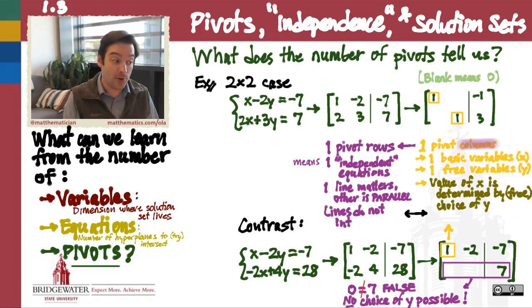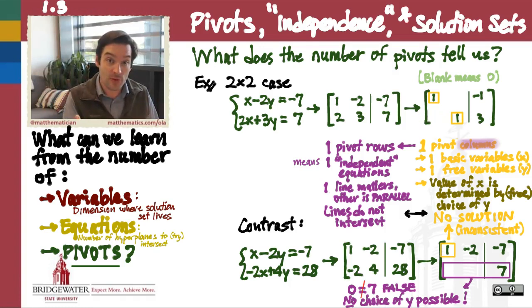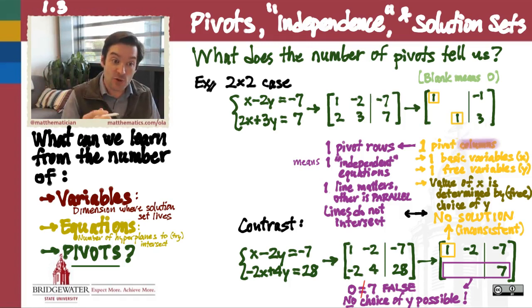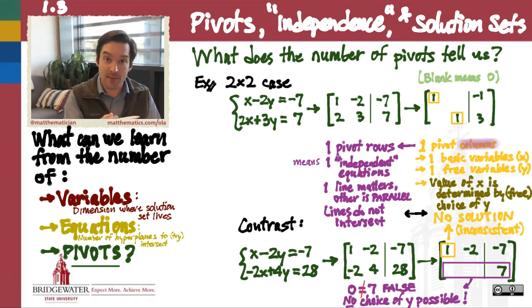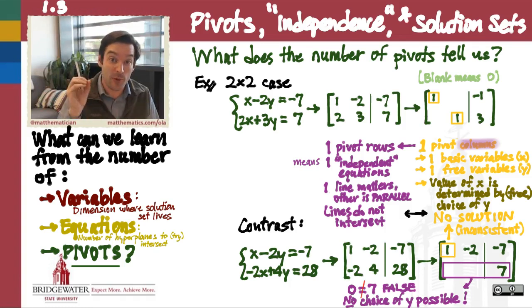Since those two are not equal to each other under any circumstance, there is no way to choose a value of y that's going to lead to a solution to this system. This system has no solution at all — graphically because the two lines determined by the rows do not intersect one another. Going from two pivots down to one, even in the simple 2x2 case, radically changed the nature of the solution set. When I had two pivots, I had two lines each telling its own unique story, and when we intersect them we get a unique point. But when I only had one pivot, the two lines were parallel, and the intersection of those hyperplanes was the empty set.